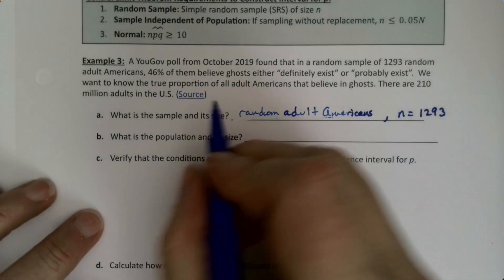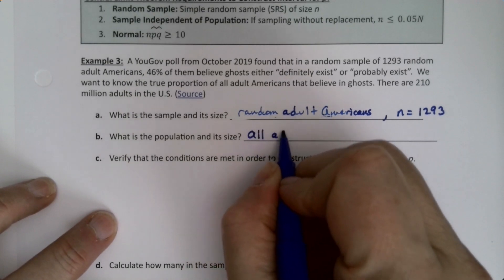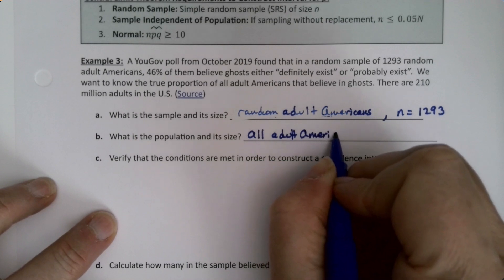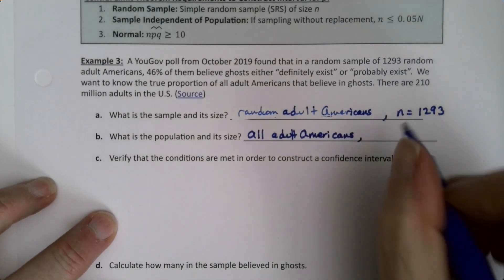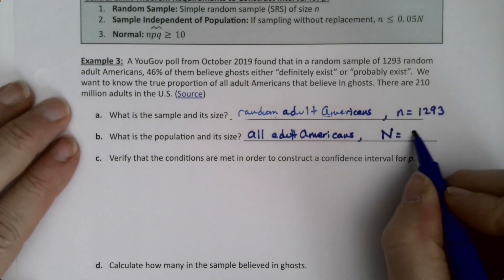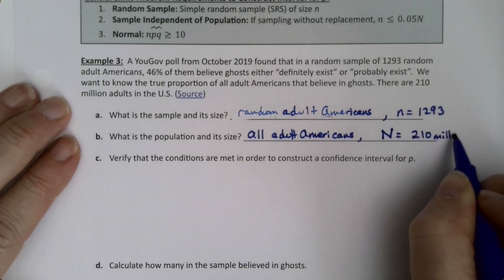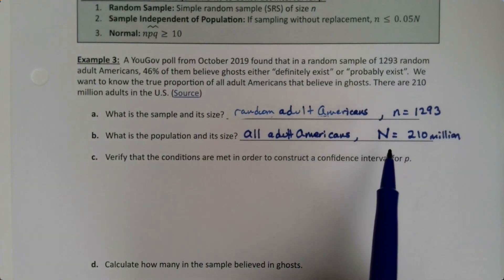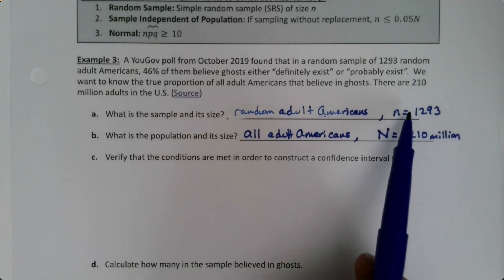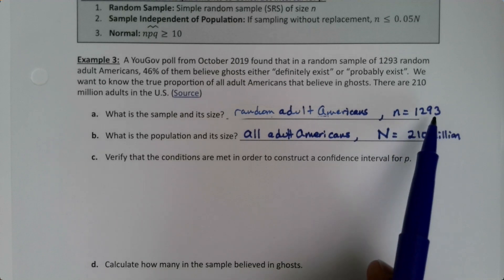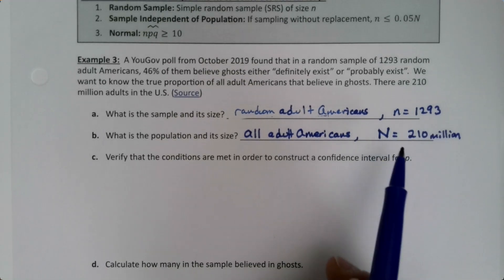The sample is random adult Americans, the size is 1293. The population is all adult Americans, and the population size, capital N, is 210 million. That's a review of notation from chapter three. Little n is sample size, n stands for number, so little n for the sample is 1293, capital N for the population is 210 million.